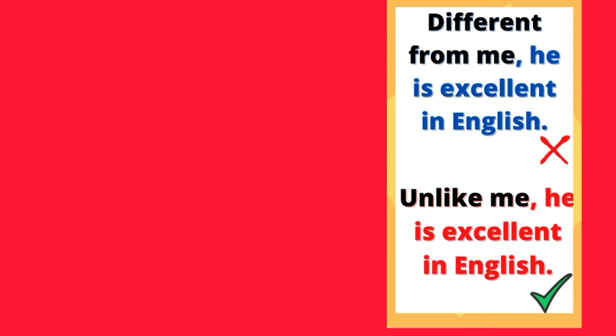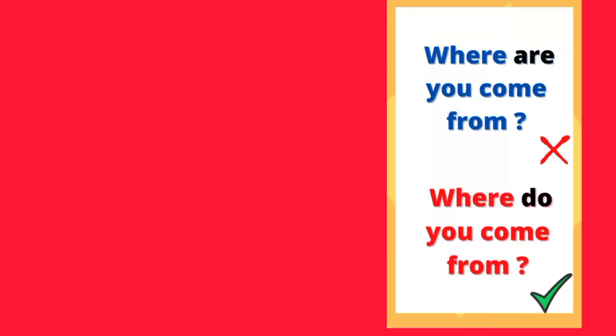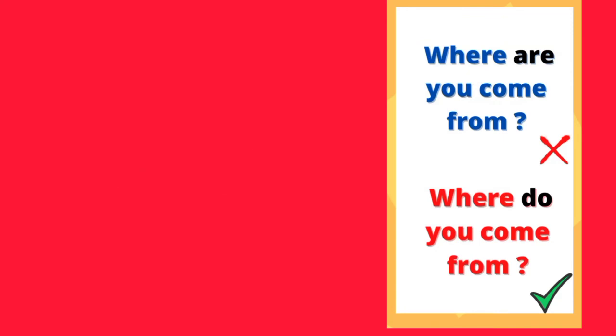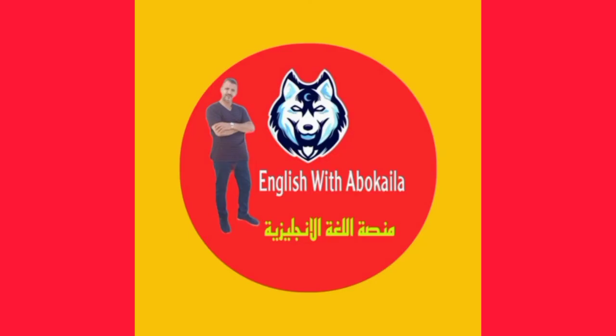Don't say: 'Different from me, he is excellent in English.' Say: 'Unlike me, he is excellent in English.' Don't say: 'Where are you come from?' Say: 'Where do you come from?'